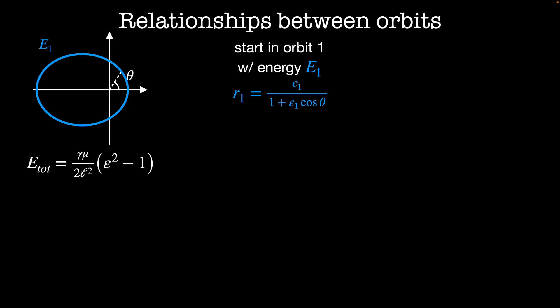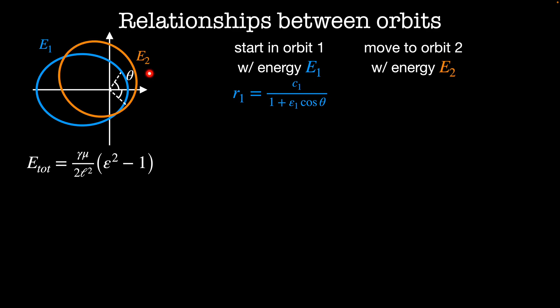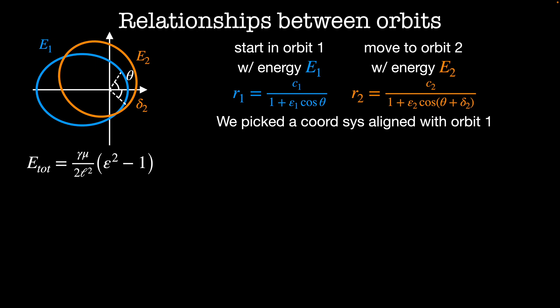What happens if I want to move to this second orbit, which has energy E2? In terms of our original coordinate system, the new orbit is given by R2 equals C2 divided by 1 plus the eccentricity of the second orbit times cosine of theta plus delta2. We picked an initial coordinate system aligned with the first orbit, but the second orbit might not be aligned with it. The angle delta2 measures the offset between the closest approach of the second orbit and that of the first.